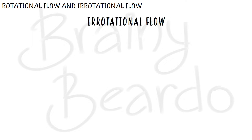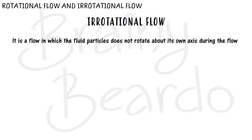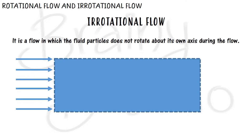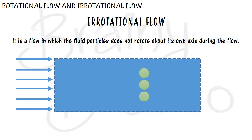Now let us understand the second kind of flow based on rotation — it is called irrotational flow. This is the case where the fluid particles do not rotate about their own axis during the flow. If we take the same fluid flowing inside a control volume and the fluid particles do not rotate about their own axis during the flow, then such kind of flow is called irrotational flow.